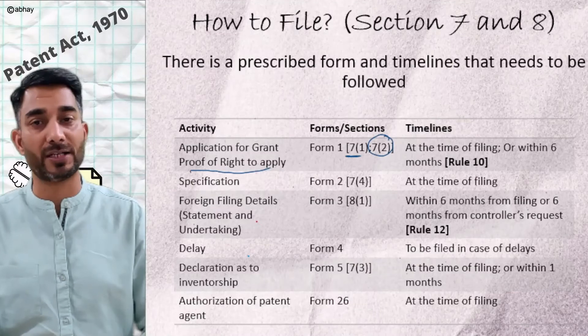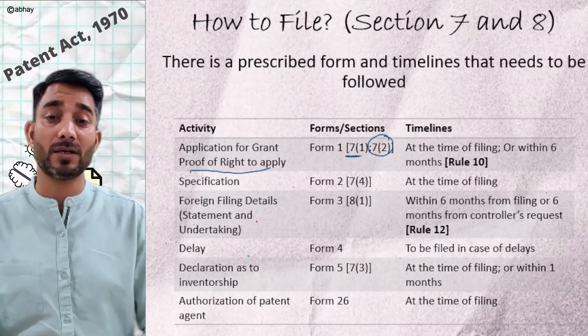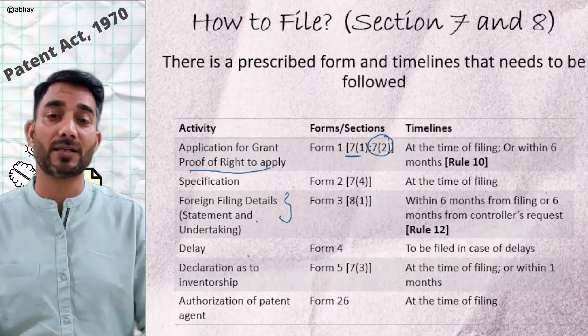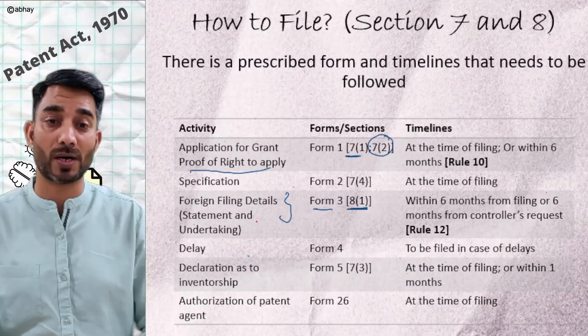It could be filed using Form 1 or Deed of Assignment. Then requirements with regards to foreign filing need to be filed using Form 3, as per Section 8-1 and Rule 12. This is important.